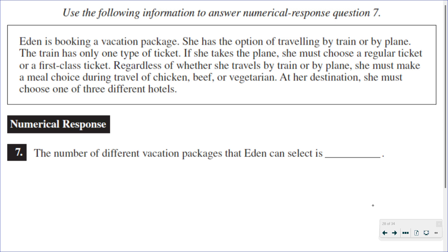So if she travels by train, let's look at that possibility. So when she travels by train, there's only one choice of a ticket. So one ticket and one selection. Now when she's on the train, she has a choice of three different meals.